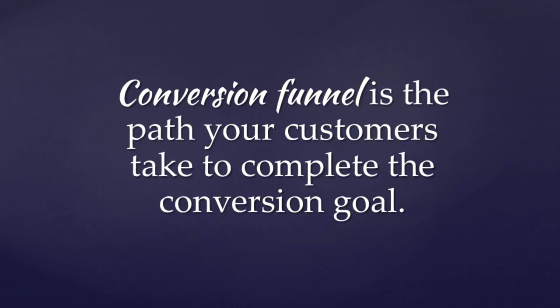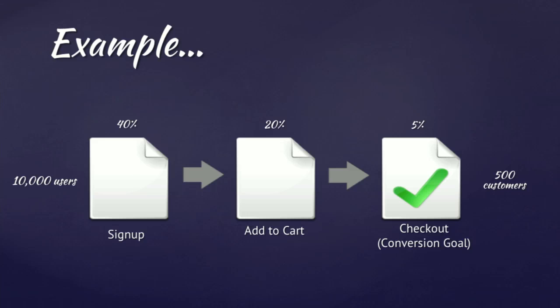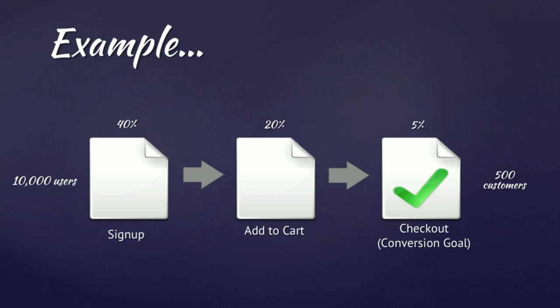A conversion funnel is the path your customers take to complete the conversion goal. Looking back at that e-commerce example: we have three steps — sign-up, add a product to the cart, and check out. Those three steps are our conversion funnel; the conversion goal is the purchase. In this example, we have 10,000 users who start down the funnel, 40% of them sign up, 20% add a product to the cart, and only 5% check out — so we have 10,000 users at the beginning of the funnel and 500 customers at the end.